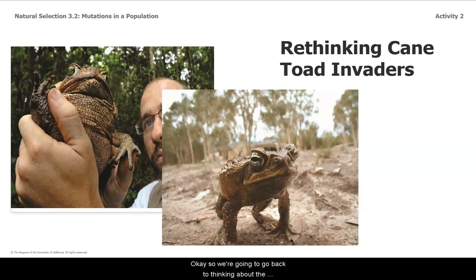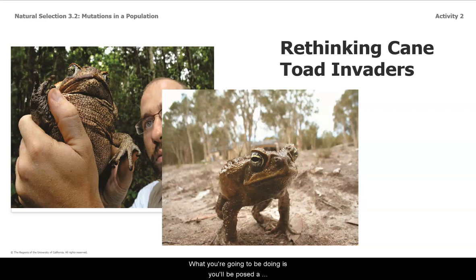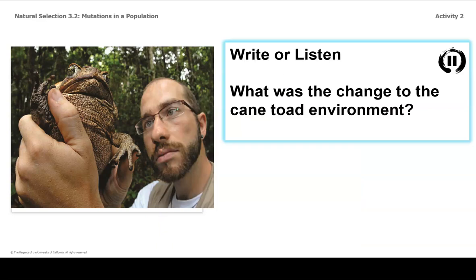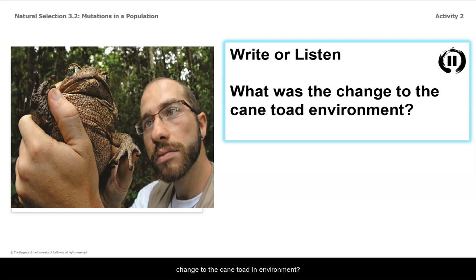Okay, so we're going to go back to thinking about the cane toad invaders article from earlier and how mutations affected their population. If you still have your annotations from before, go ahead and bring those notes back out. You'll be posed a question and then reread a segment of the article to answer that question. The first question to write or listen for is: what was the change to the cane toad environment?